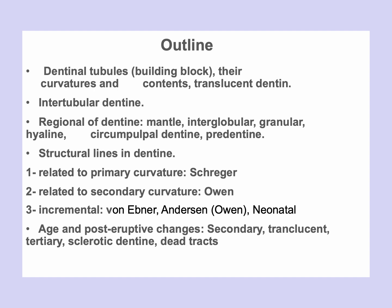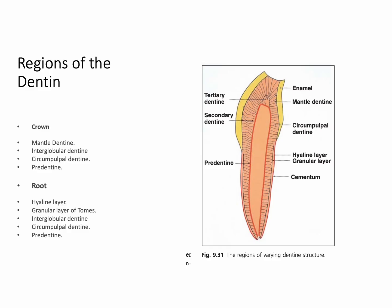Today we are going to talk about the regional changes — the regional zones of dentine that can be seen under the microscope. Remember that in anatomy and histology we always see a structure, describe it, and give it a name. The name is mostly related to the function or shape, and sometimes it is related to the scientist who described and discovered it for the first time.